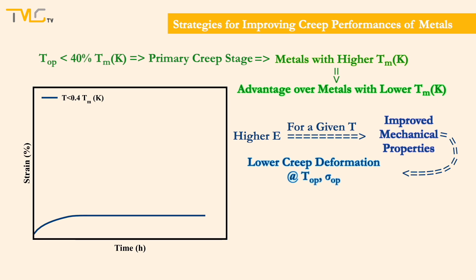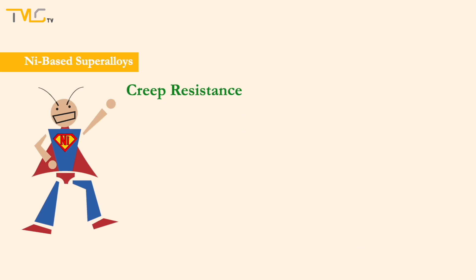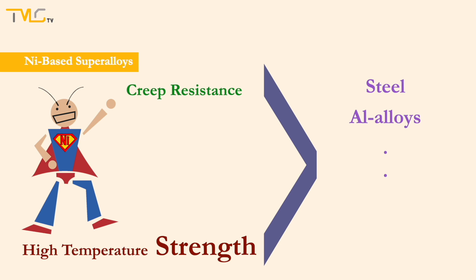Another alternative can be solid solution alloying of the metal, where it will be employed for introducing secondary phases to the system, which would enhance the creep behavior via manipulating the microstructural processes. Lastly, the material at hand can be replaced by nickel-based superalloys, which is a promising material family exhibiting extensive creep resistance and high temperature strength compared to conventional steel, aluminum, or other alloy families.